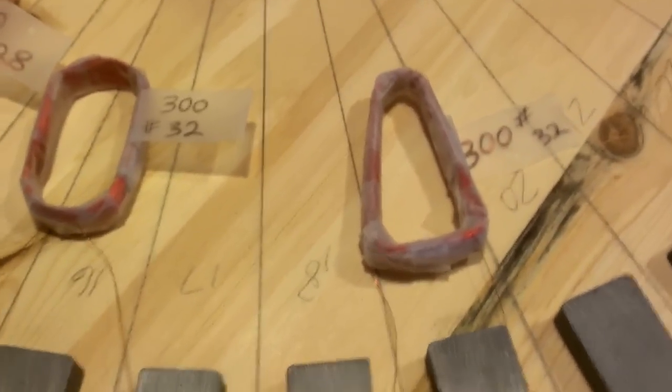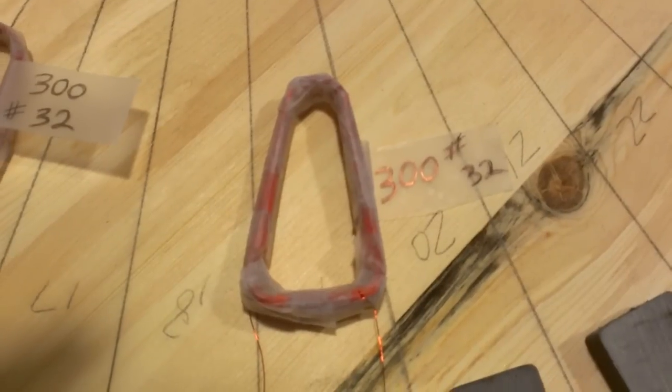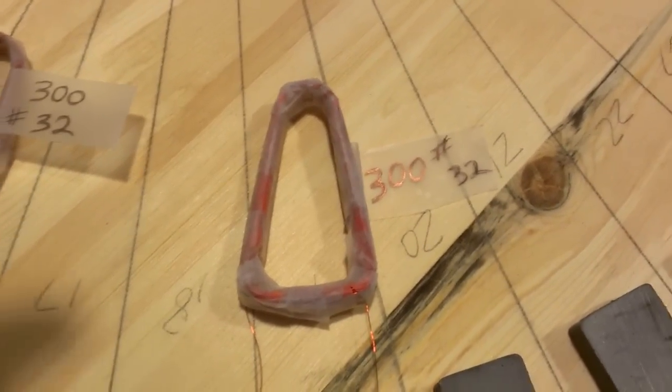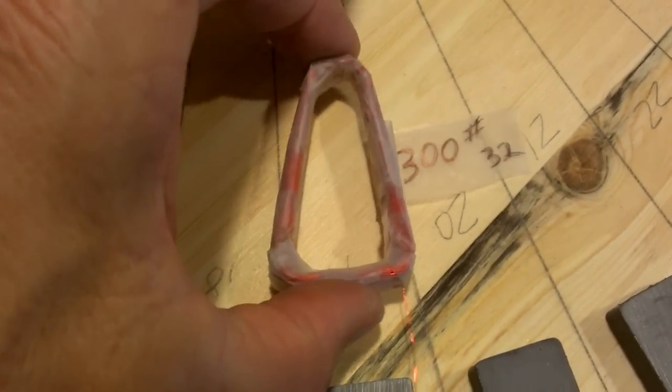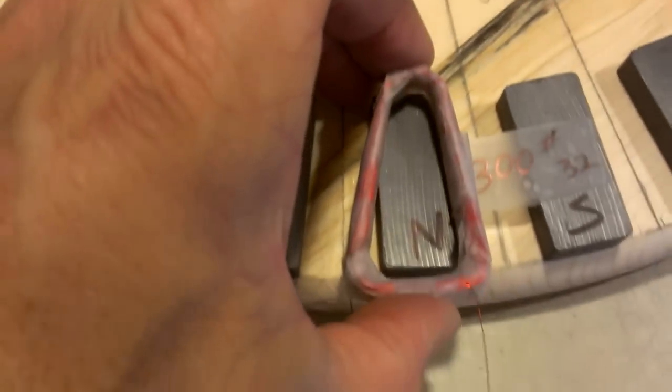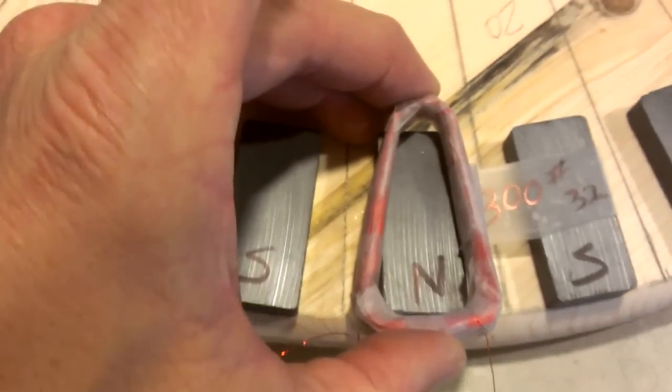I'm going to show you this triangular shaped coil that's going to go on the stator. This triangular shaped coil has been wrapped 300 times with number 32 wire and here's how it looks on top of a magnet.